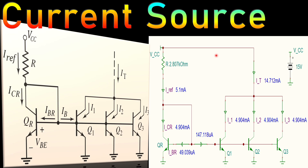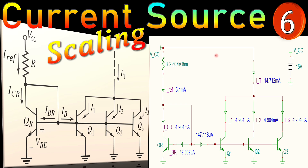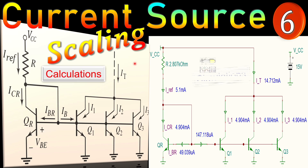Welcome back to a new video about current sources. This is example number six, continuing with our BJT current sources. In this case we look at the scaling of a current from a reference to a load current. We will place branches in parallel to create larger current values — maybe four times, three times, or two times — using simple current mirror upscaling. We will do that step by step and verify our calculations using SPICE simulations.